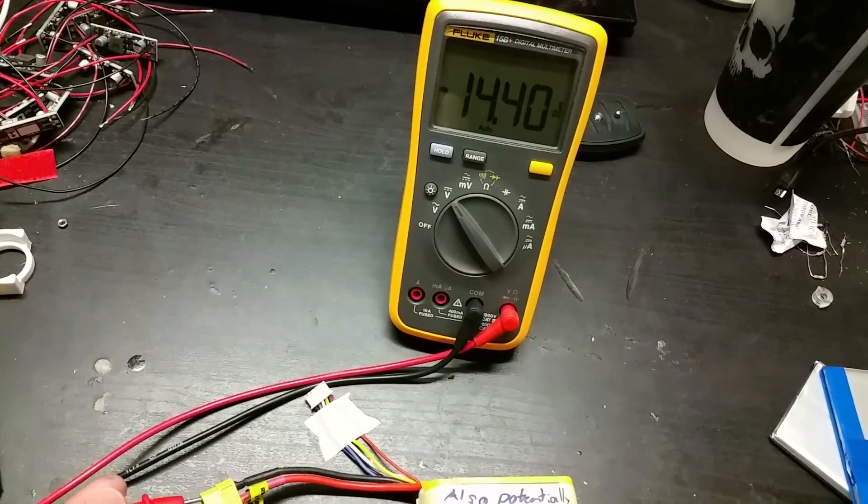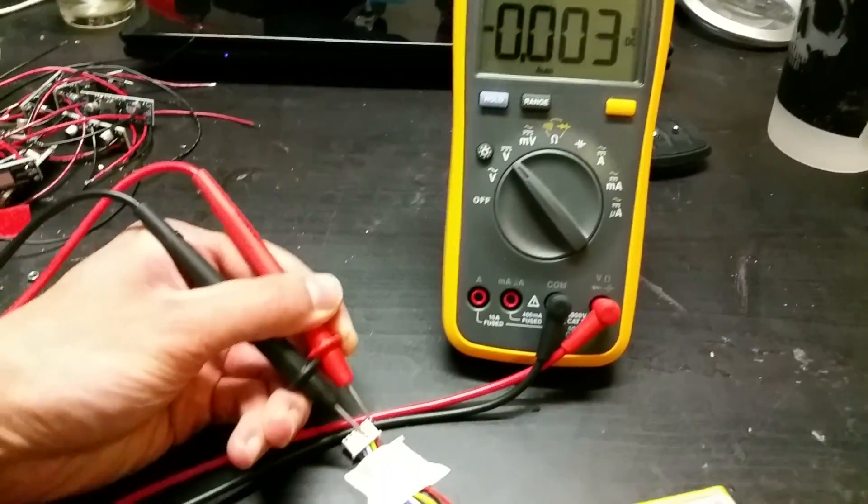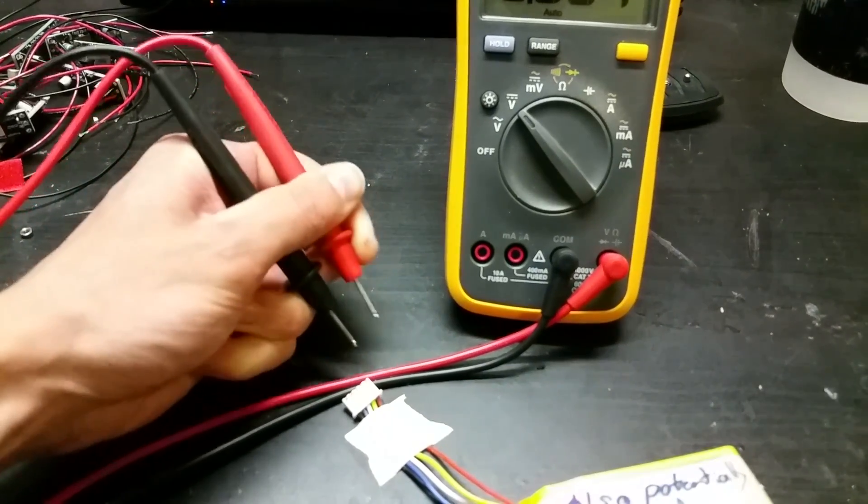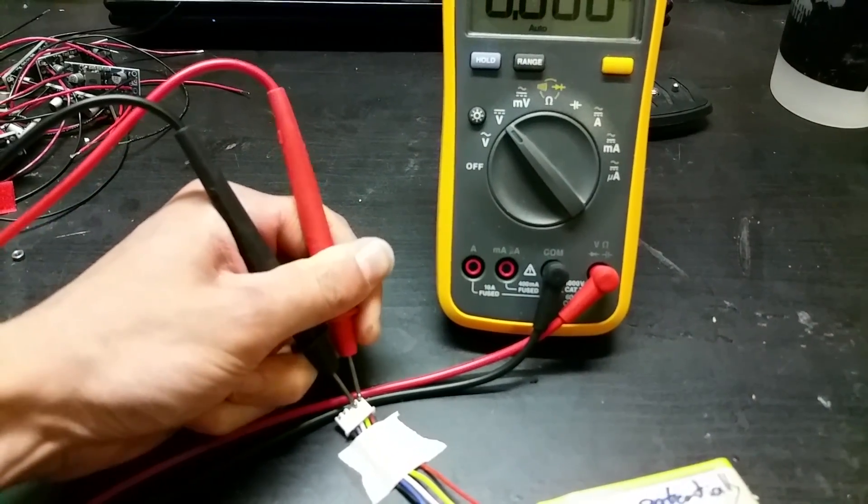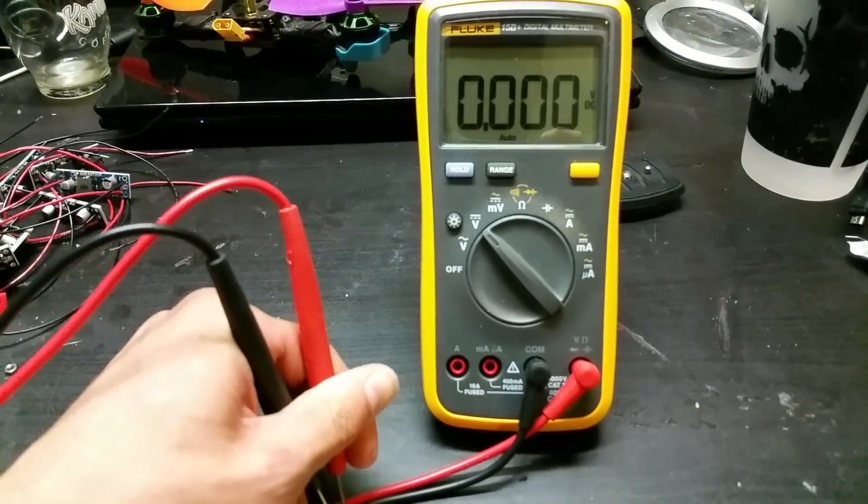And we're at about 14.4 volts, so that's a good sign already. Now let's see what we have for cell voltages. So this was our first cell which was fine, 3.6, not a problem.